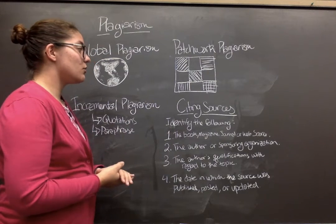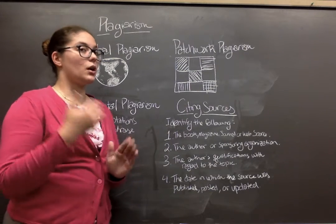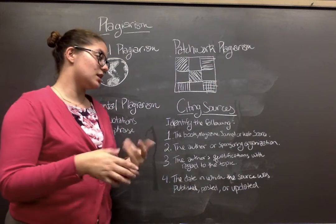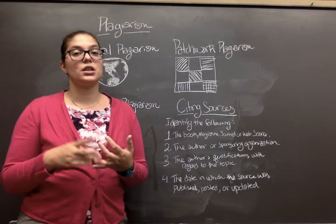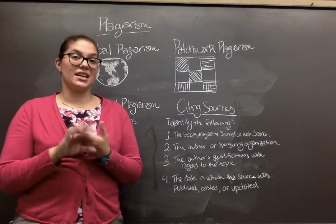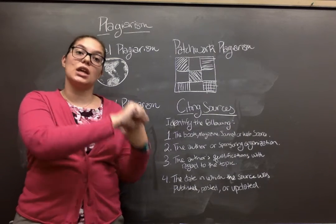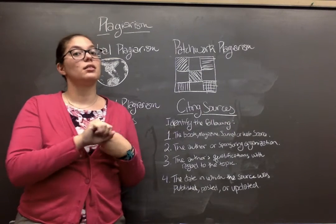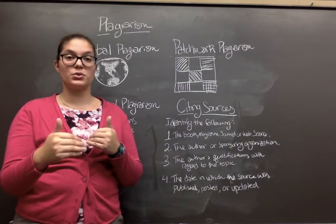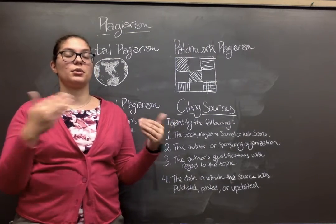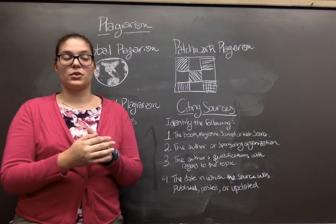The fourth thing you have to cite in an oral citation is the date on which the source was published, posted, uploaded, or updated. If the source has been updated, use the updated date — do not use the original post date, because the original post date is not the most current version.